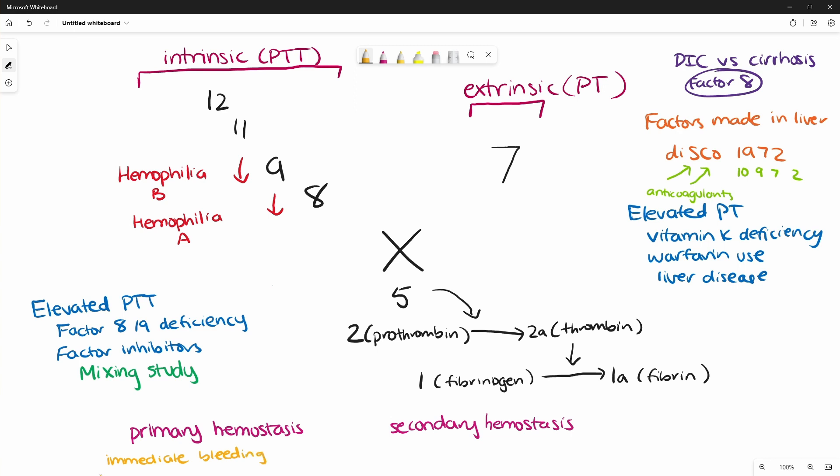For example, like a dental procedure, and it just continues to ooze all the time. And that suggests a platelet problem. Whereas secondary hemostasis is when you have delayed bleeding, so several hours after a procedure, for example. And this suggests a problem with the coagulation cascade.